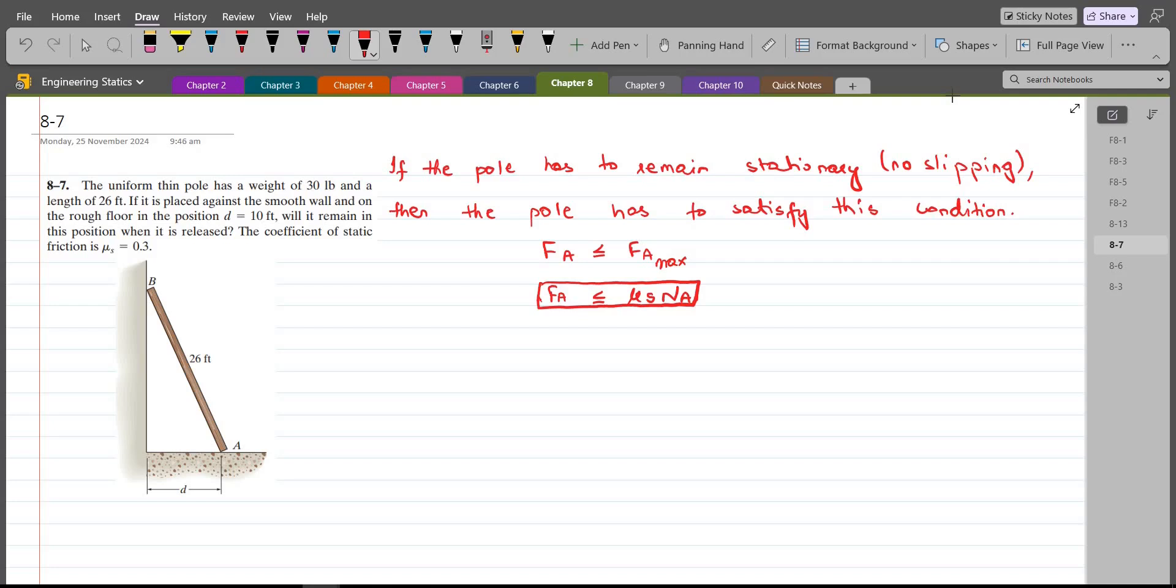At point B, because point B is the smooth wall, I just have a normal reaction at point B. Point A is a rough floor, so I have a normal reaction as well as the frictional force.